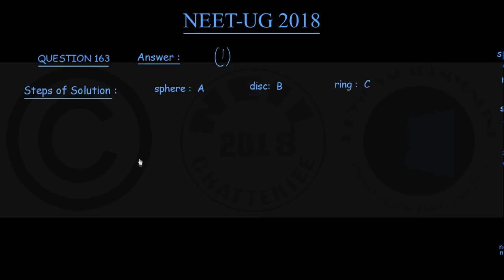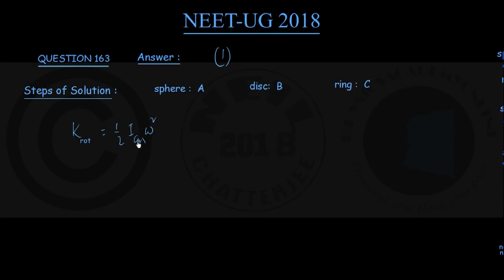Now, what is the formula for rotational kinetic energy of any body? That formula — calling it K_rot — for any body rotating about an axis through the center of mass can be expressed as half times I_CM times omega squared, where I_CM is the moment of inertia of the body about an axis passing through its center of mass, and omega is its angular velocity.